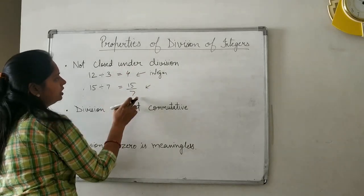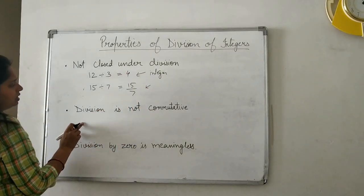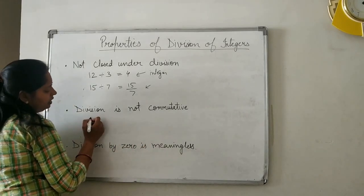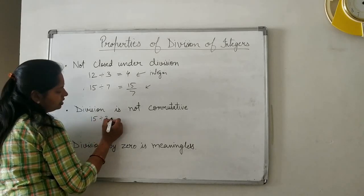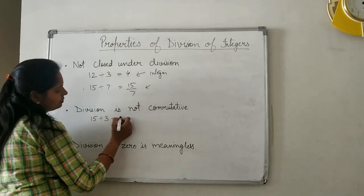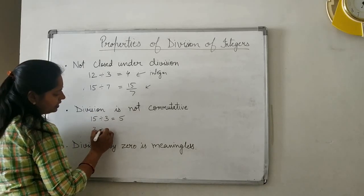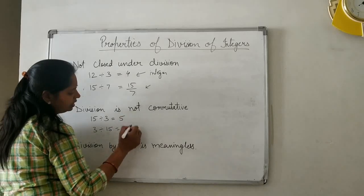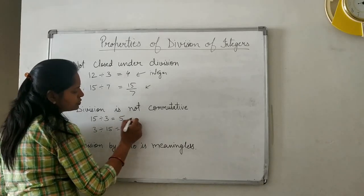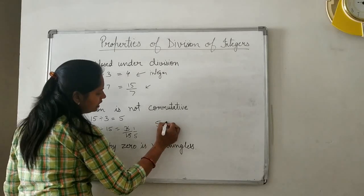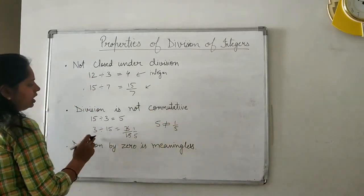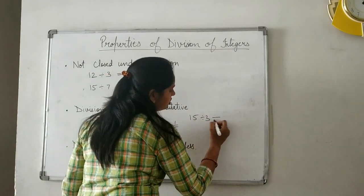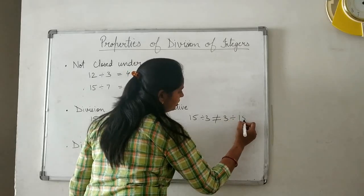We are not always getting an integer as the answer. Second, division is not commutative. If you do 15 divided by 3, the answer is 5. But 3 divided by 15 is equal to 1/5. Since 5 is not equal to 1/5, division is not commutative. That means 15 ÷ 3 is not equal to 3 ÷ 15.